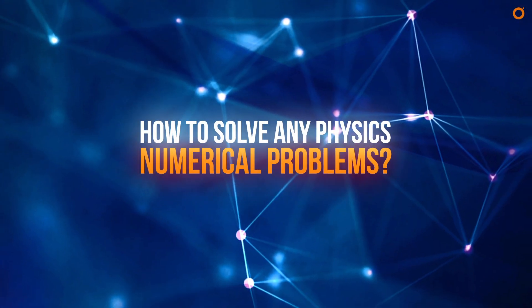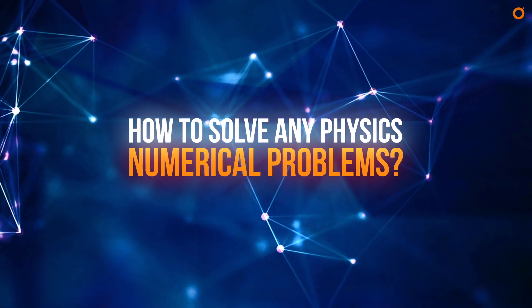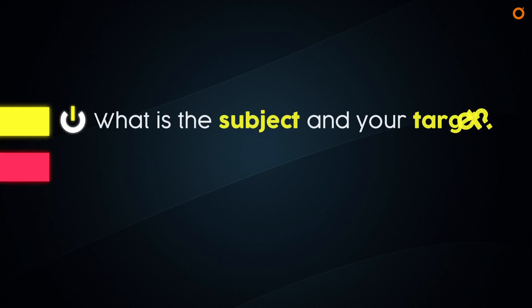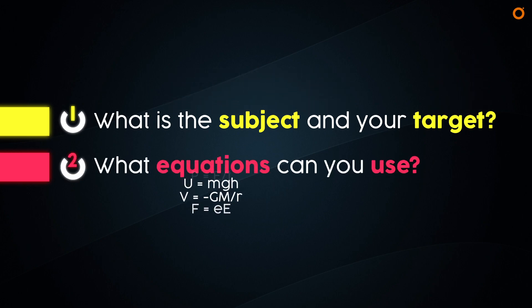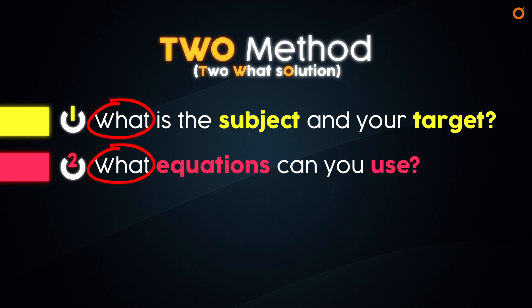Hello and namaste everyone, welcome to my channel Sigma X. Today I will teach you how to solve any physics numerical problems easily by applying this method. Our physics solving method comprises two simple steps: step number one, what is the subject and your target, and step number two, what equations can you use. Since both steps start with 'what', you can remember this as the TWO method.